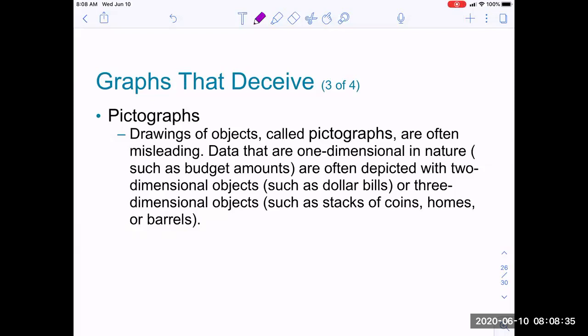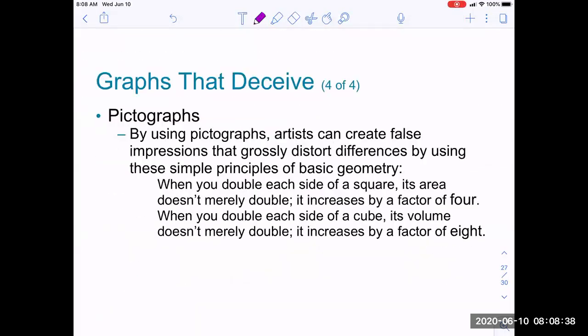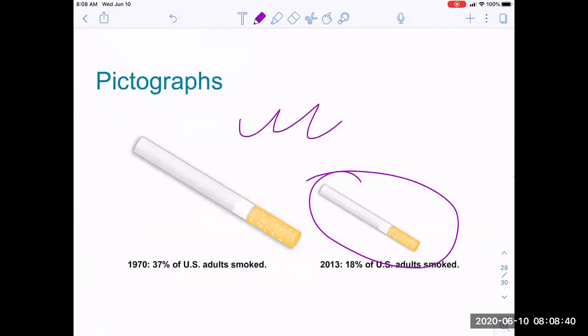Pictographs. Something like this. These trick your eye. Because this is 18% and this is 37%, and it looks more than double. Because 37% is only about two times the 18%, but it looks a lot more. It looks like at least three or four times as much. Here's what's going on with these.